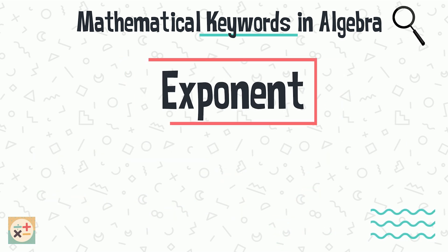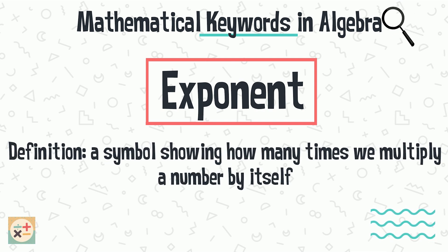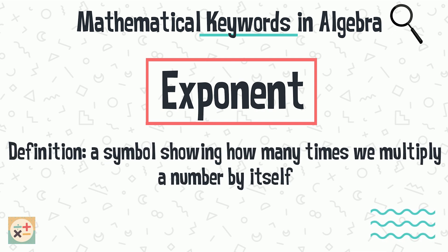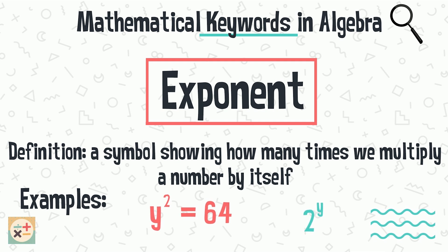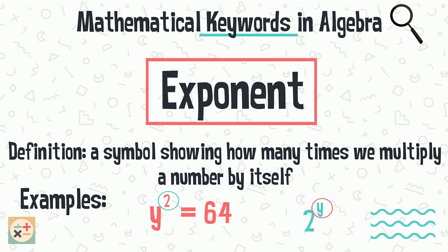An exponent is a symbol showing how many times we multiply a number or variable by itself. Exponents can be whole numbers, variables, decimals or fractions, and they can be positive or negative. Exponents may sometimes be called indices or powers.